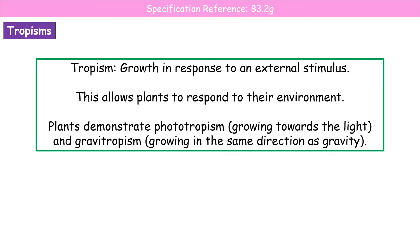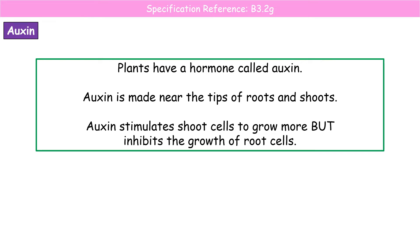First thing: what is a tropism? Quite simply, a tropism is a growth in response to an external stimulus — this is how our plants respond to the external environment. Two types of tropism you need to know for GCSE papers: phototropism, which is all about light, and gravitropism, which is about gravity. The key hormone — and if you only remember one hormone for plants this is it — is called auxin. Auxin is produced near the tips of shoots and tips of roots, and it affects the ability of cells to elongate.